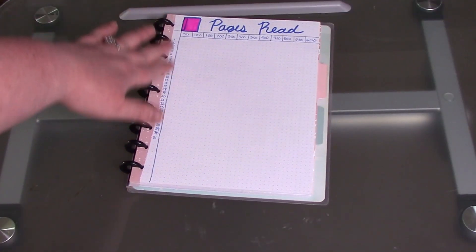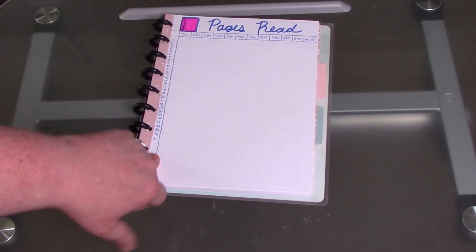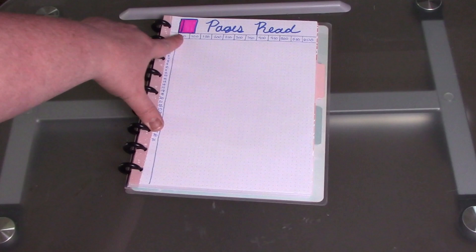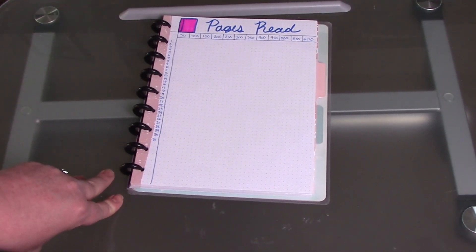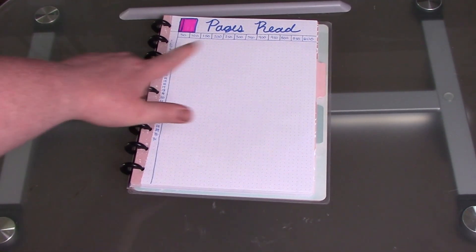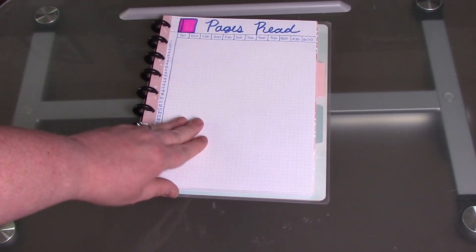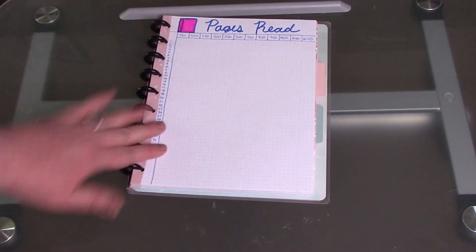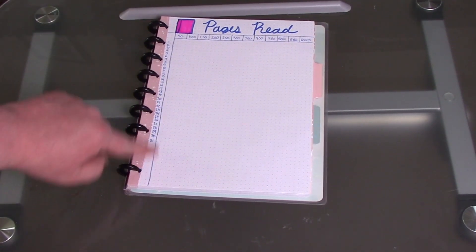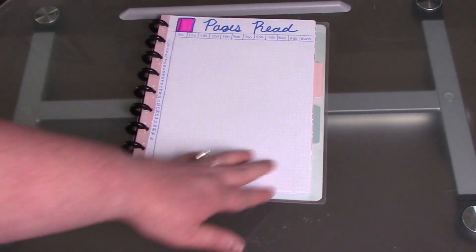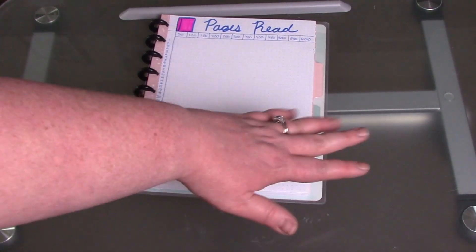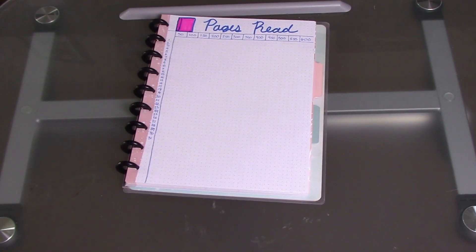This will be my pages read spread. I've got them in 50-page increments up to 600. As you guys know, some days I will read 3 to 4 to 10 volumes of manga, so there will be some days where I exceed what's available on this page. For now, this is what I'm going to do. Down here through the bottom, since I have some extra space, I might put like extra pages read, like a little bracket for that.